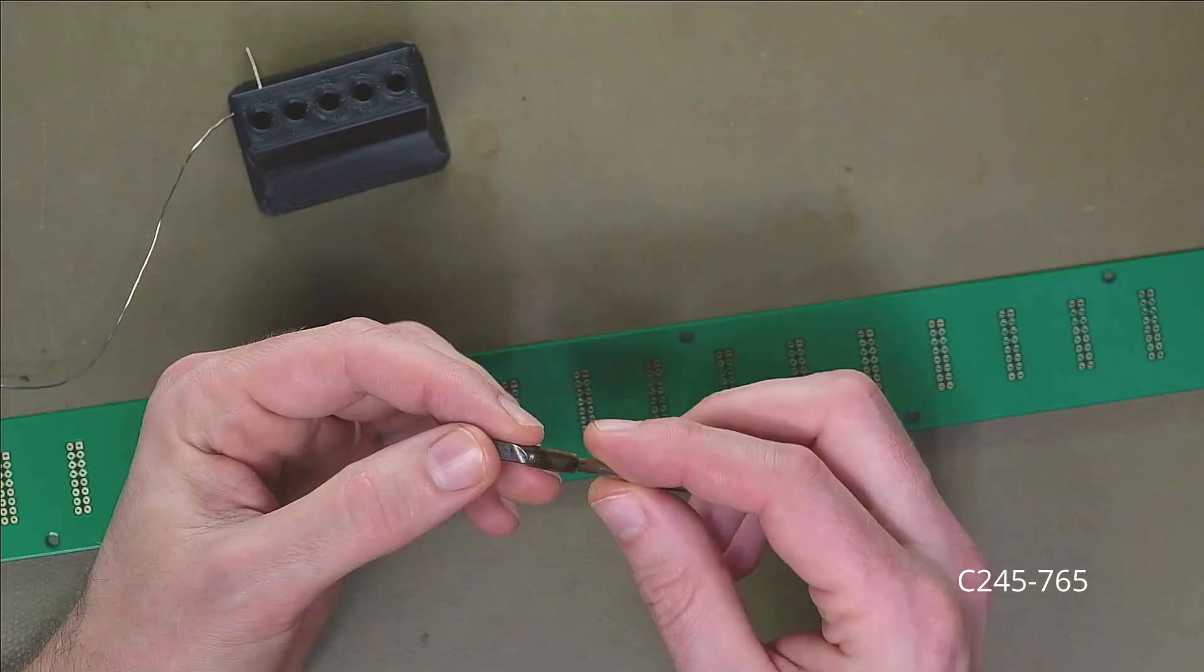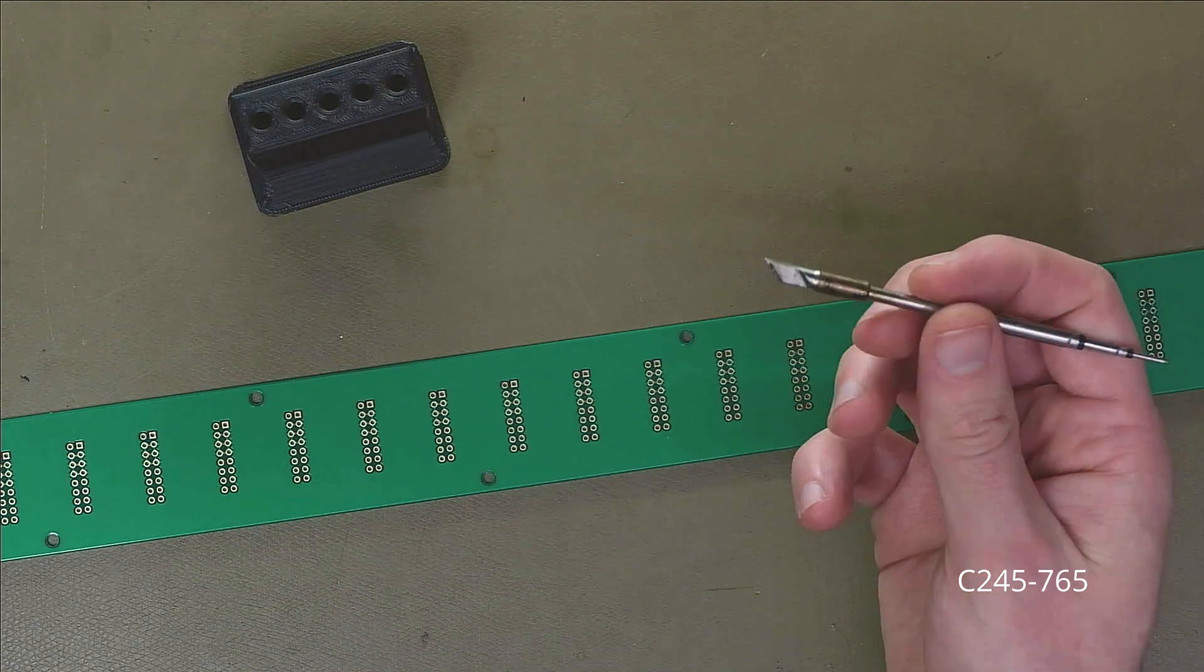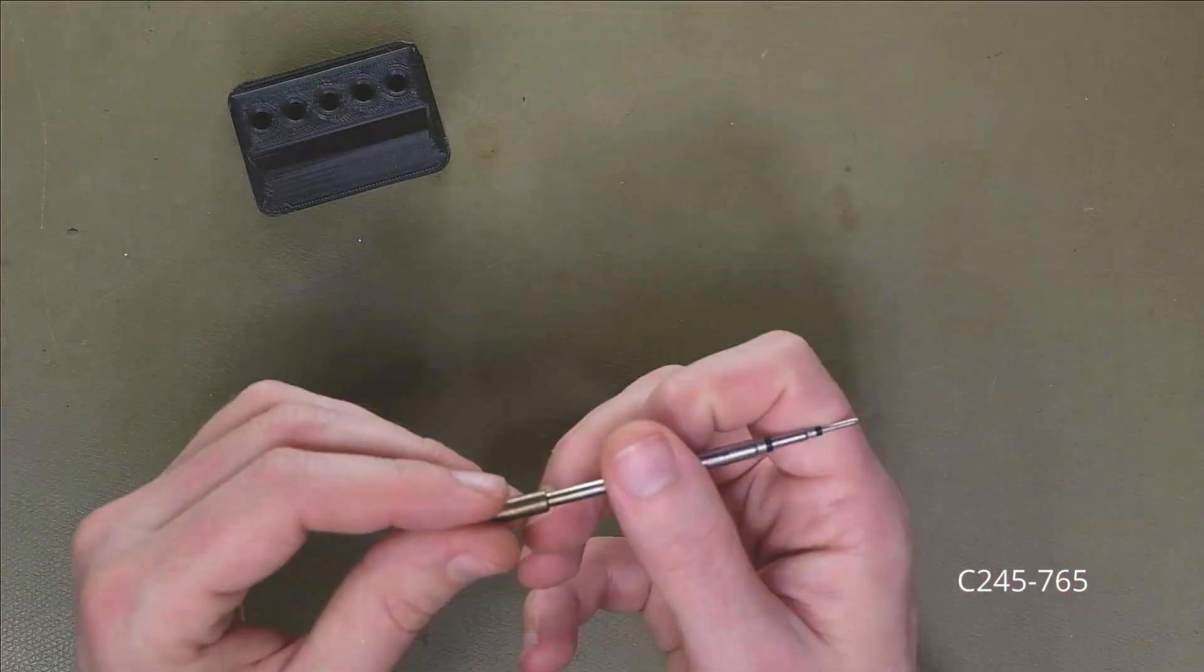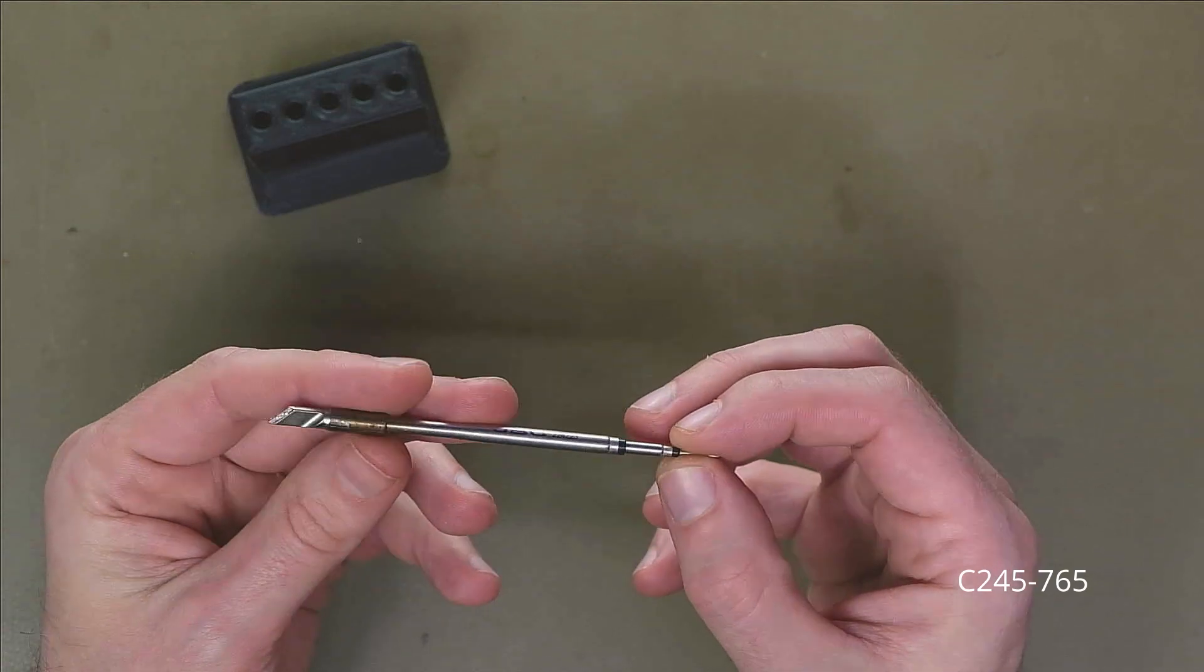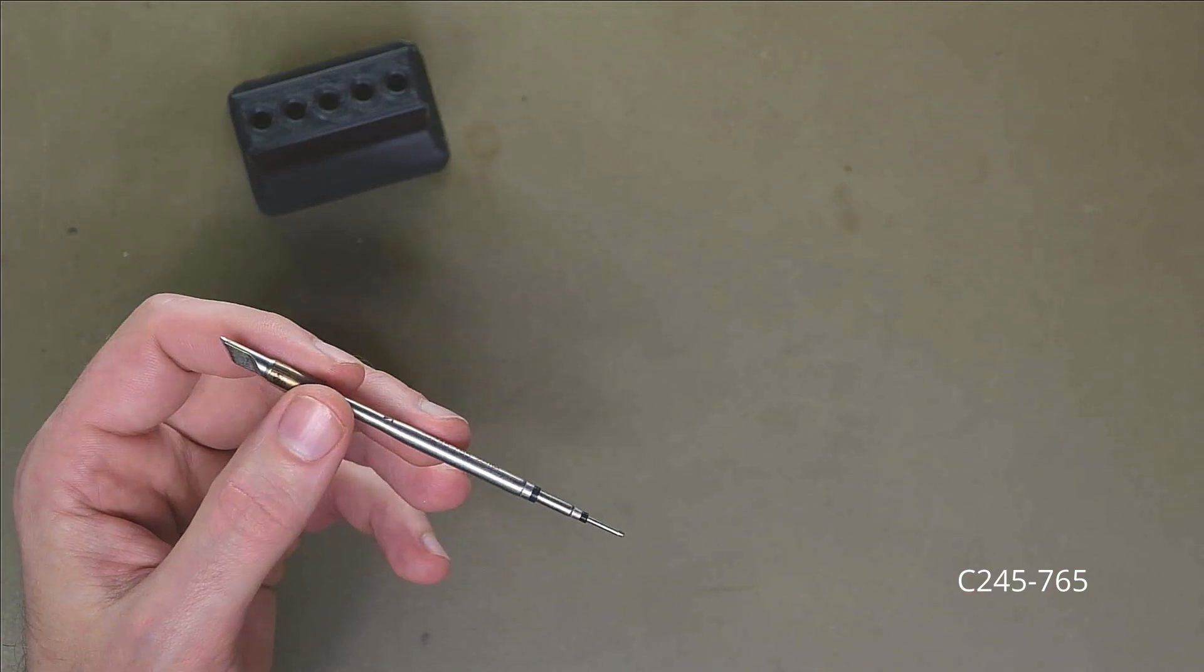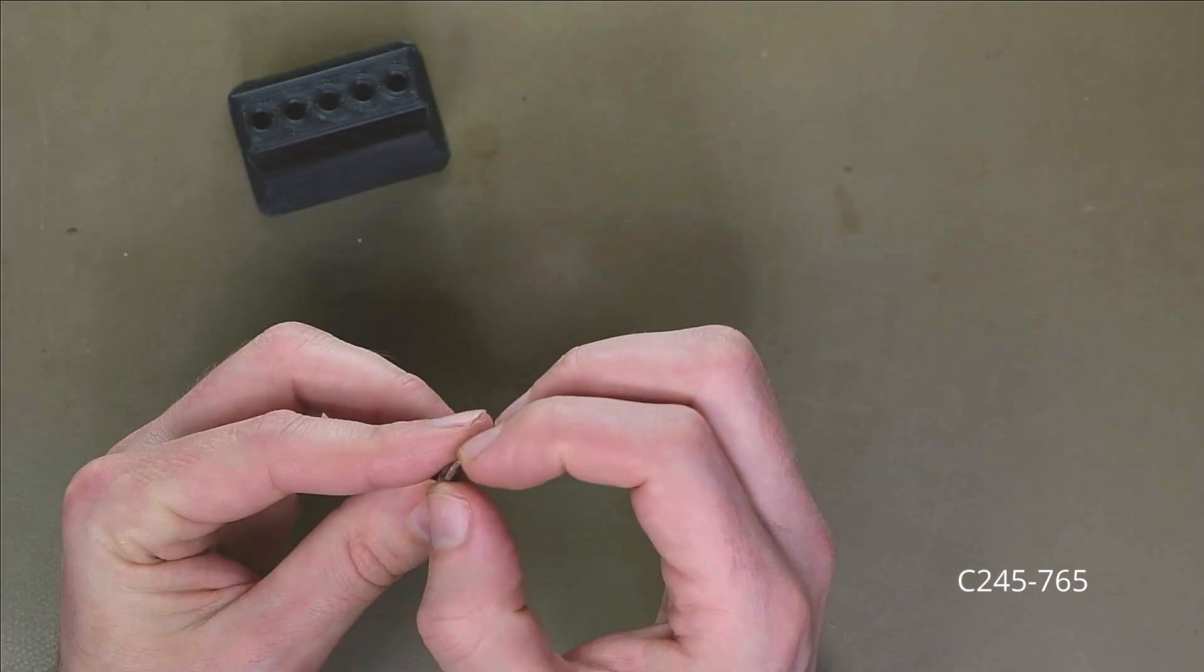It's not sharp in any manner, but I think you can use this to scrape if it's necessary somewhere. Sometimes you have to scrape a little bit with your soldering iron. Try to prevent it, but sometimes it happens. This is 765 and it's 0.4 by 6 millimeters.